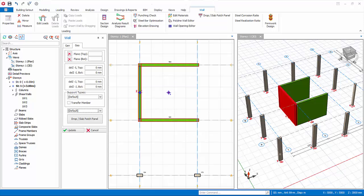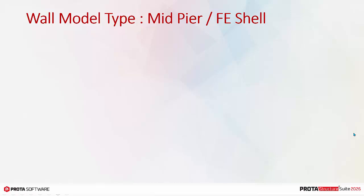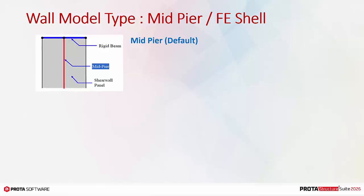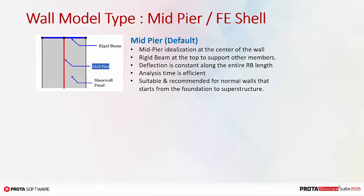We will now explain in more detail the wall model types. Wall model type: mid-peer and FE shell. If you do not use any option, by default it will be mid-peer. Mid-peer idealization is a single frame element at the center of the wall. A rigid beam is automatically created at the top of the wall to support other members such as beams and slabs. The deflection is constant and the same along the entire rigid beam length. Analysis time is fast and efficient, as there are only two elements per wall. It is suitable for normal walls that start from the foundation to superstructure. We recommend you always use this option unless there are special reasons otherwise.